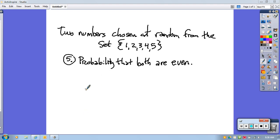We could set it up this way. We have two events that we want to happen. The probability that both are even, so the probability that we choose an even number in our first choice would be 2 out of 5.